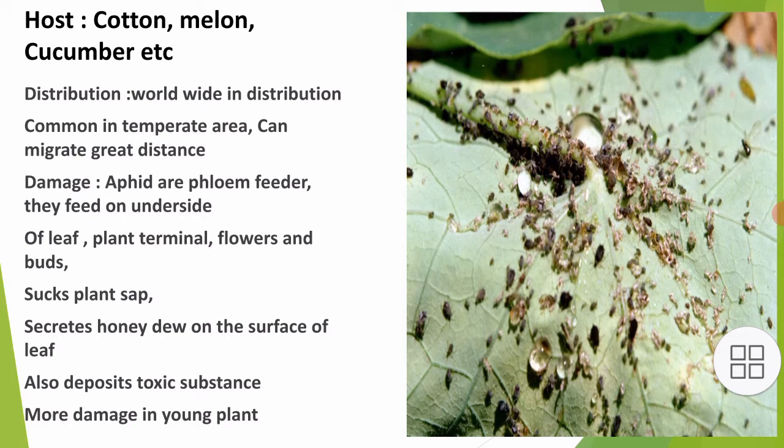The host plants of Aphis gossypii are cotton, melon, cucumber, and others, but the main host is the cotton plant. They are worldwide in distribution, common in temperate areas, and can migrate great distances.